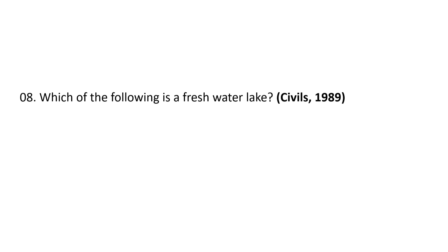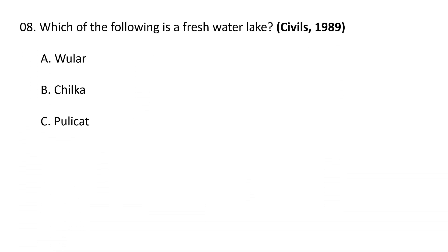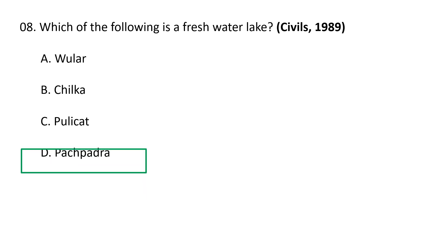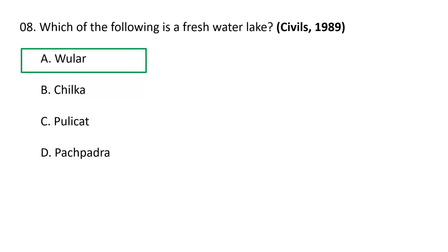Next question: Which of the following is a freshwater lake? A) Wular, B) Chilka, C) Pulicat, D) Pachpadra. The correct answer is A, Wular, which is a freshwater lake. Chilka is a brackish water lake, Pulicat is the second largest brackish water lagoon, and Pachpadra is a saltwater lake in Rajasthan.